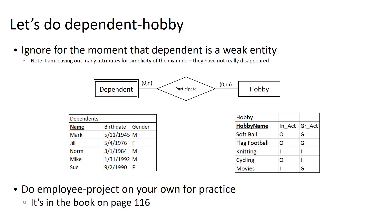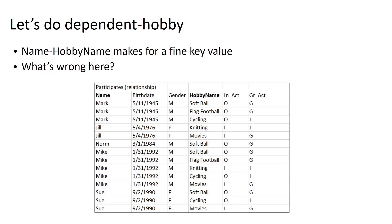Let's start by decomposing the many-to-many relationship between dependents and hobbies. You can ignore for a moment that dependent is a weak entity — that doesn't really impact what we're talking about here. If we wanted to model this relationship between dependents and hobbies, one approach would be to smush these two tables together — combining the participant's name and the name of the hobby to uniquely identify every row. So if I ask you to point to the row that is Mark and flag football, this is the only row that meets that criteria. This is kind of a reasonable way of looking at this data.